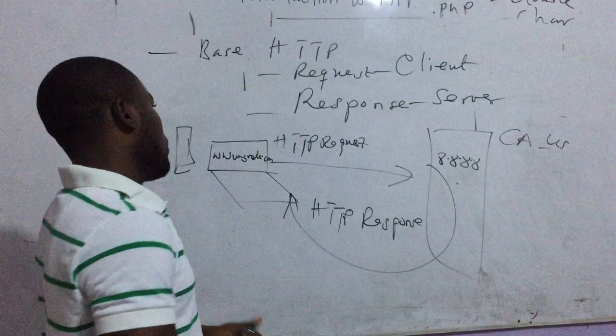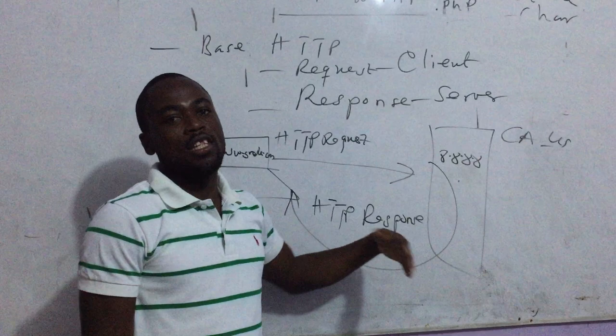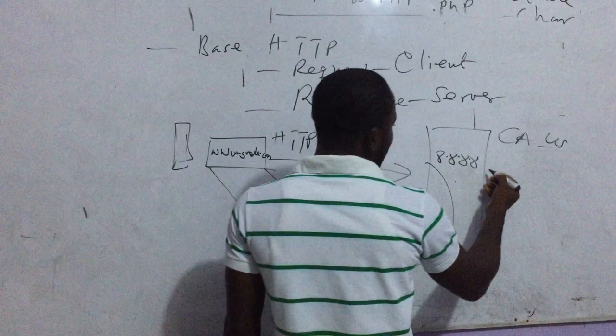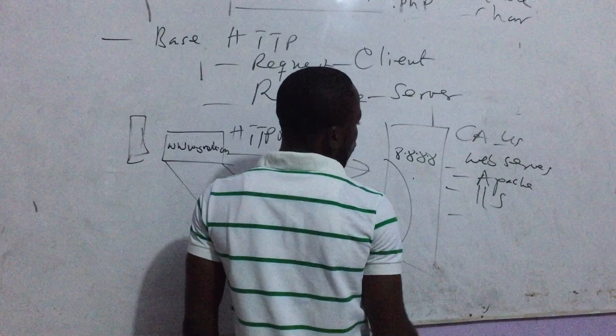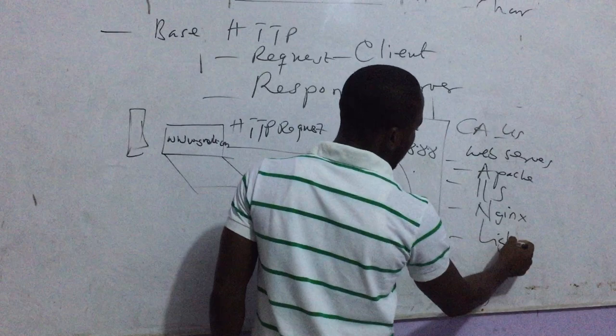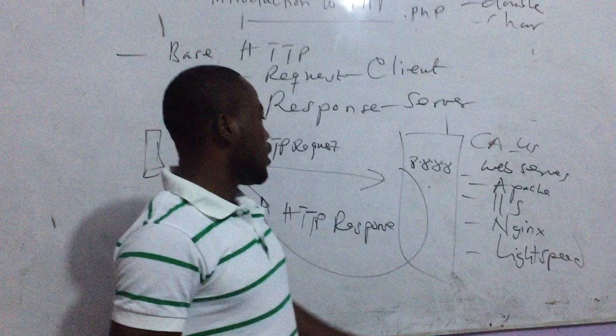When PHP runs on the server, you need a web server to execute the PHP script. The web server can be Apache. We also have IIS, Nginx, and LiteSpeed, among other web servers. These are the popular ones, and we can host PHP on all of them.